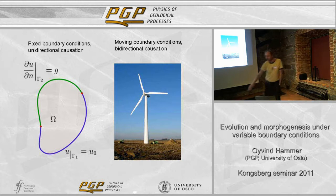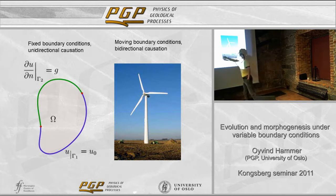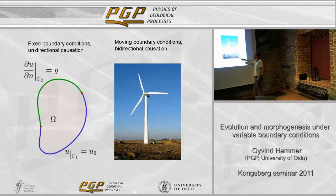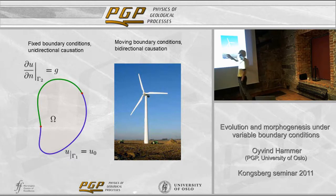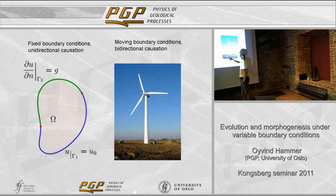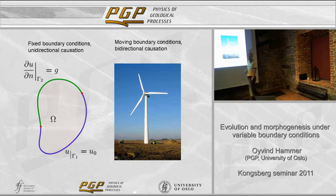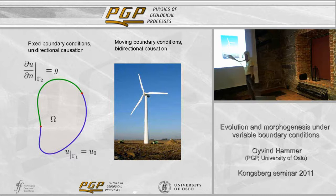This is kind of the iconic physical model, or a mathematical model. You have some boundary conditions - in this case mixed boundary conditions - and then you have something inside that is reacting. You have a temperature, for example, assigned to the boundary, and you know what's happening inside. That's what we call boundary conditions.